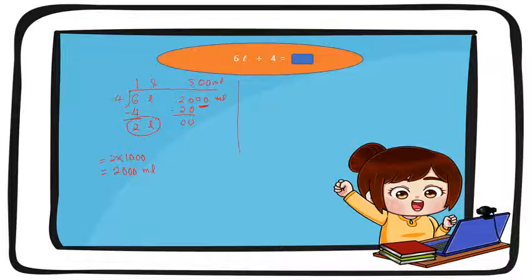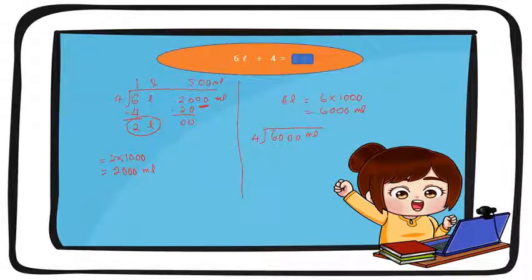Ataupun, ada satu lagi cara ialah, kita boleh tukarkan siap-siap. Enam liter, kita tukarkan kepada milliliter. So, enam darab seribu, jadi enam ribu. Kemudian, barulah kita bahagi dia. Ada dua sifar sini. So, bawa saja ni atas. Tapi, jawapan dia berbezalah. Satu dalam liter dan milliliter, satu lagi dalam milliliter. Ni antara caranya lah, macam mana awak nak selesaikan.